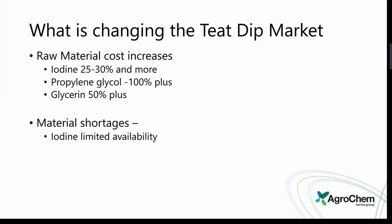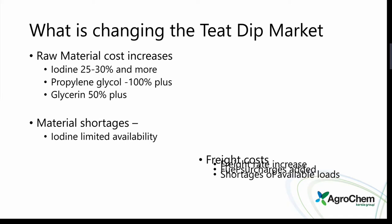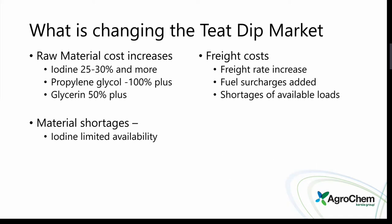Material shortages — definitely had some things come up in the dip market. Iodine's been in limited supply. A lot more people are looking at chlorine dioxides, peroxides, and the fatty acid dips and options as well. And with freight rates increasing, fuel surcharges being added, and shortages of loads, looking at concentrated dips and concentrated options and adding additional emollients gives you the variability on price and helps to overcome some of these freight costs.